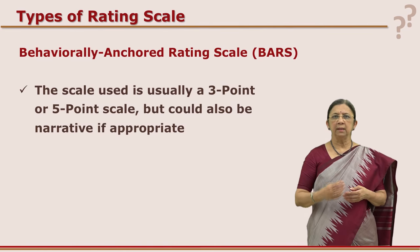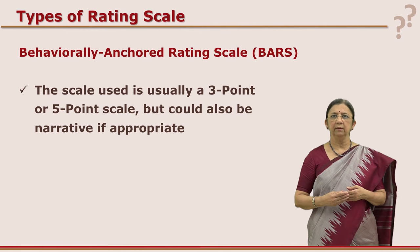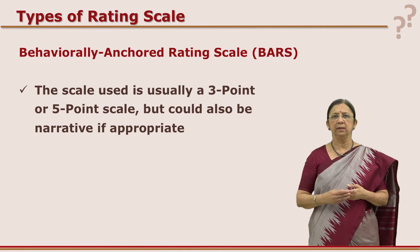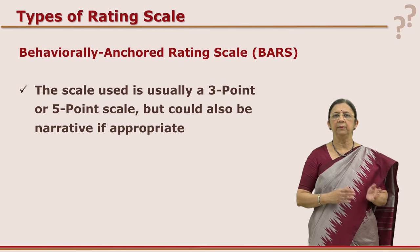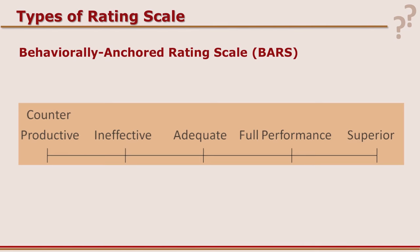The BARS scale has statements describing the behavior of a particular job and can be three point or five point. Instead of numbers, narratives are used — every column has a description that distinguishes behavior from effective to not-so-effective. For example, from counterproductive to superior: counterproductive, ineffective, adequate, full performance and superior performance. The rater can rate an individual on these lines.